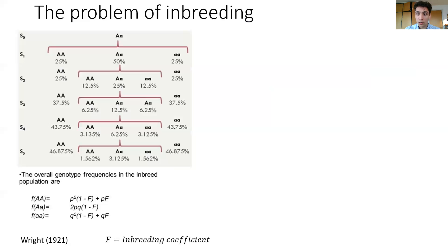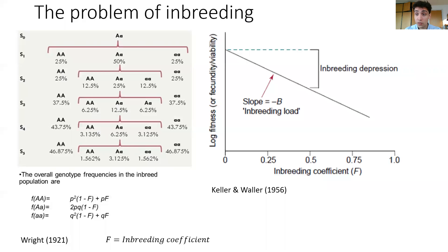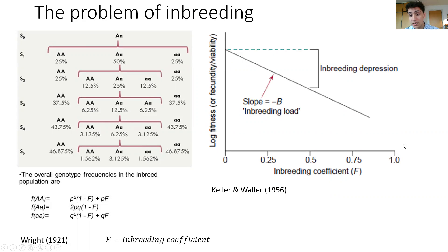Now, why is this important? Well, this decrease in heterozygosity actually gives rise to a phenomenon known as inbreeding depression. And inbreeding depression is this decrease in fitness you see when you take the fitness of a population and plot it against its inbreeding coefficient. So for some level of inbreeding, you can see a resultant decrease in fitness, and this decrease in fitness is typically defined as inbreeding depression.